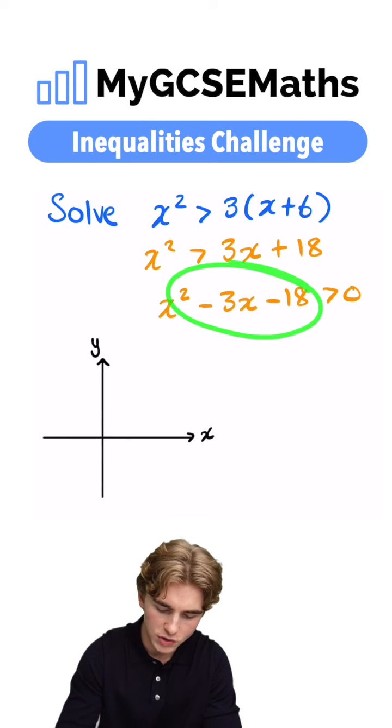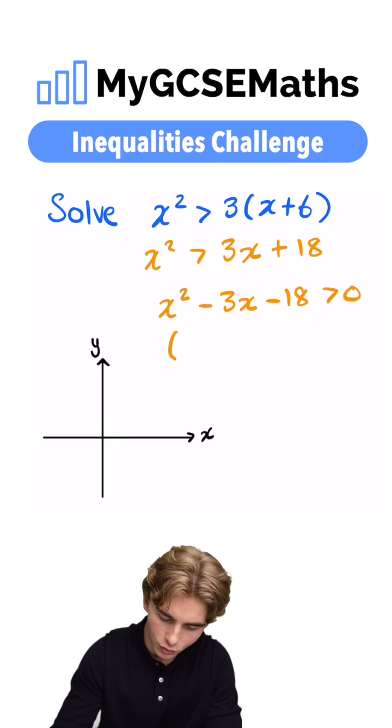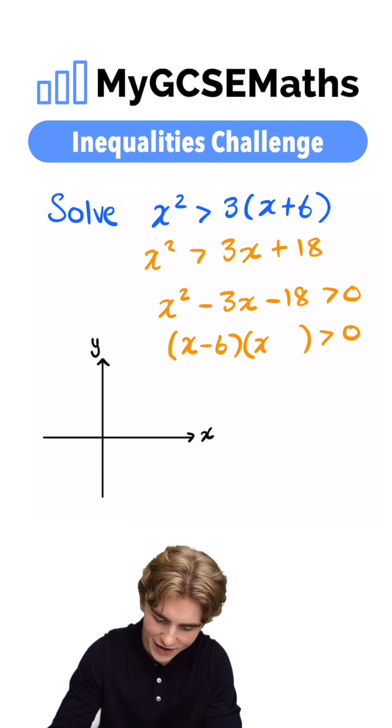This gives us a quadratic which we can factorize. We need two numbers which multiply to give minus 18 and add to give minus 3. So we're going to have x minus 6 and x plus 3.